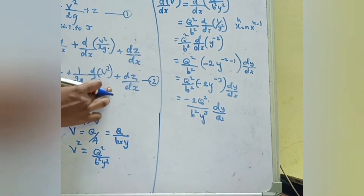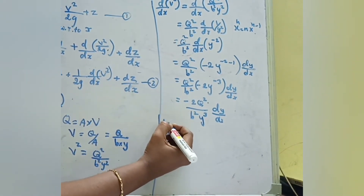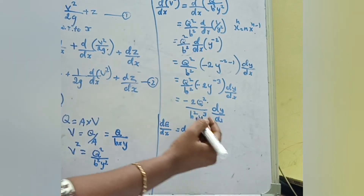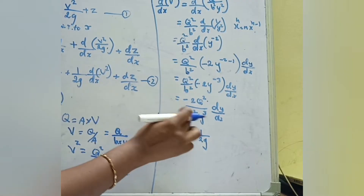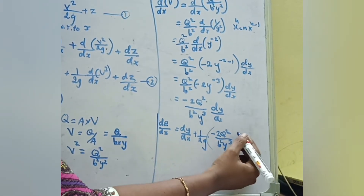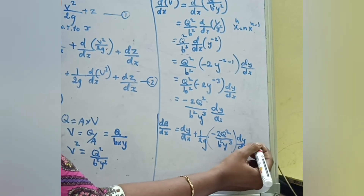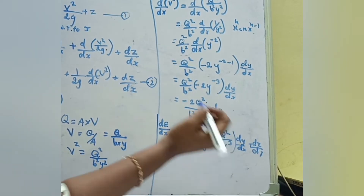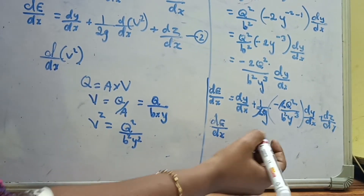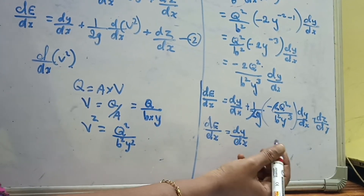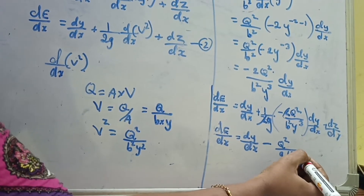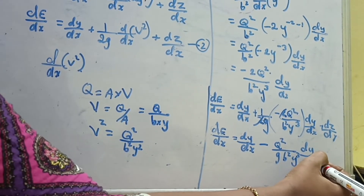Now we substitute the value of d/dx of v-squared back into the equation. dE/dx equals dy/dx plus 1/2g times [minus 2 Q-squared divided by B-squared times y-cubed times dy/dx] plus dz/dx. The factor of 2 cancels, giving: dE/dx equals dy/dx minus Q-squared divided by (B-squared times g times y-cubed) times dy/dx, plus dz/dx.